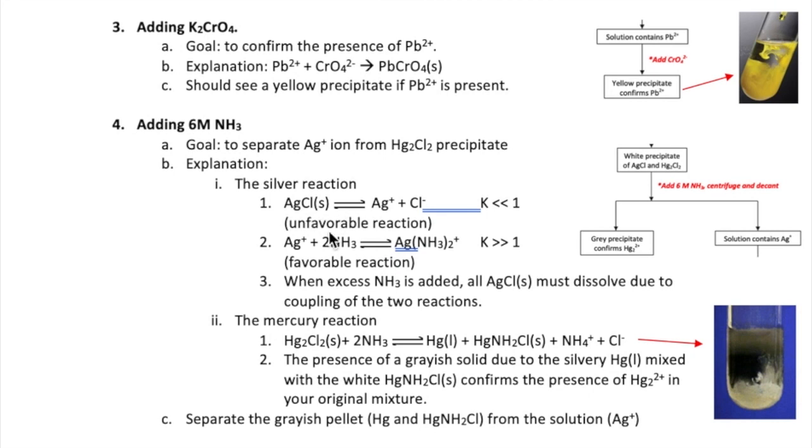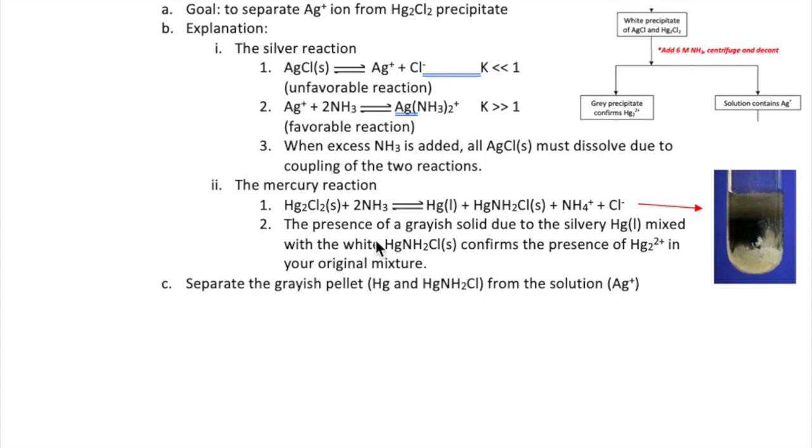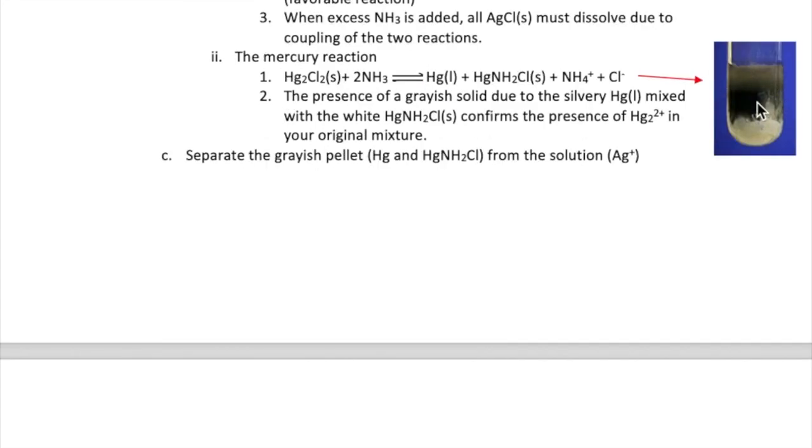For silver, NH3 is a ligand, so its addition results in the formation of a complex ion, AgNH32+, which is soluble. At the same time, NH3 and mercury undergoes a disproportionation reaction, which is a type of oxidation reduction reaction, where one substance, in this case mercury one, is converted into two substances. In our situation, mercury one ion is, in one case, reduced to liquid mercury, and in the other case, it's oxidized into a compound called mercury two amido chloride. As shown in the picture, these two compounds appear as a grayish solid mixture because liquid mercury is silvery black and mercuric amido chloride is white. When you see this, it confirms that mercury one is present in your original sample.